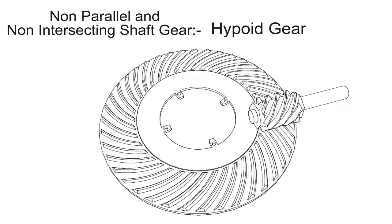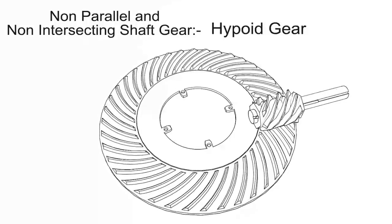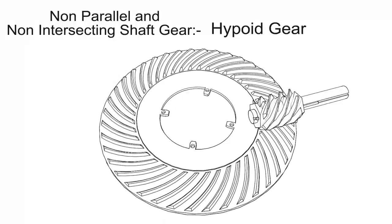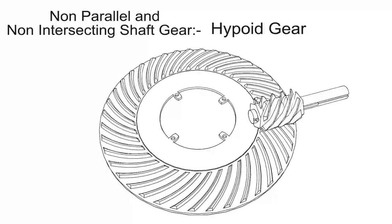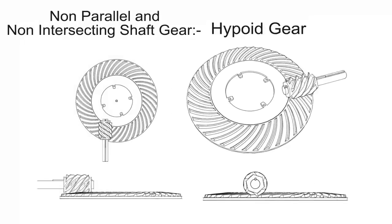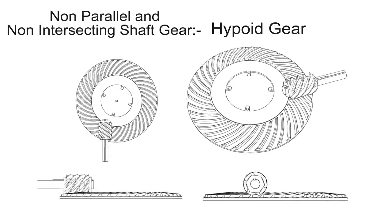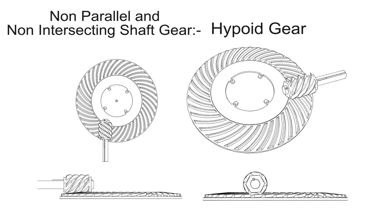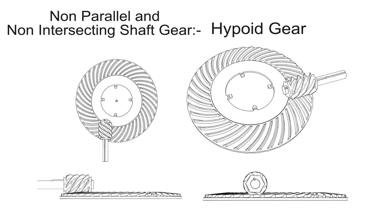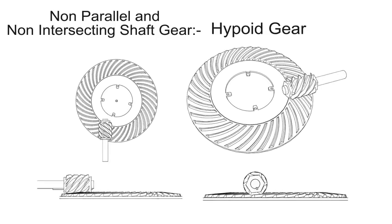Hypoid gears — a hypoid gear is a style of spiral bevel gear whose main variance is that the mating gear's axes do not intersect. The hypoid gear is offset from the gear center, allowing a unique configuration and a large diameter shaft. Teeth on a hypoid gear are helical.